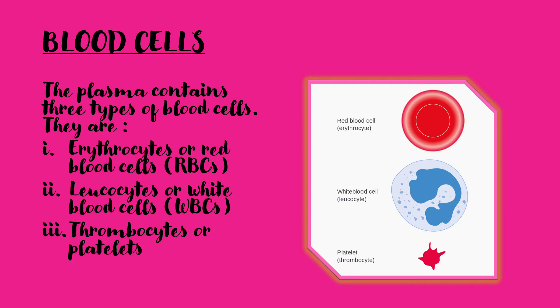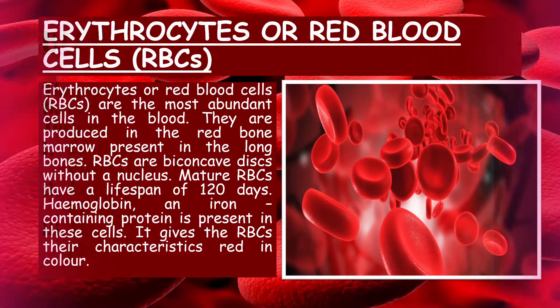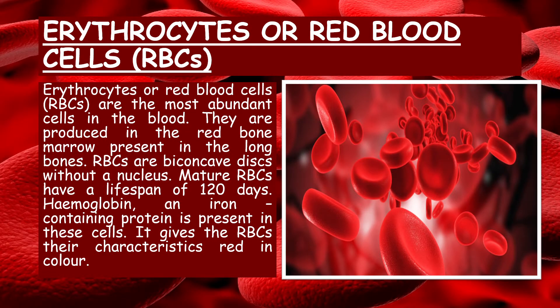The plasma contains three types of blood cells. They are: Erythrocytes or red blood cells (RBCs), Leukocytes or white blood cells (WBCs), and Thrombocytes or platelets.